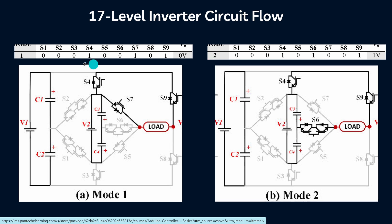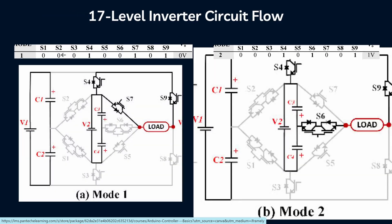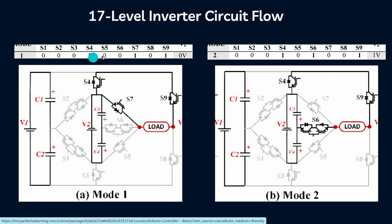Now we can see the operating modes. In mode 1, we are using 9 MOSFETs, labelled S1 through S9. For the zero-volt level, switches S4, S7, and S9 are ON — these 3 devices alone are ON, and at that time it will produce the 0th level.